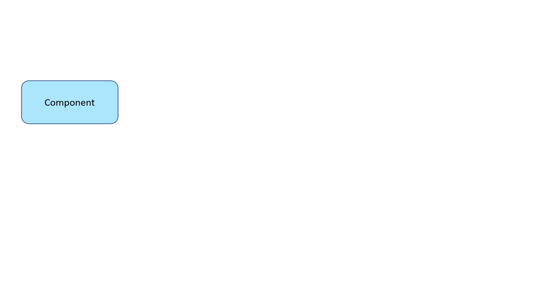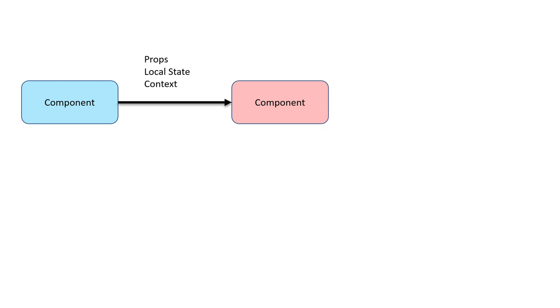Let me do a quick recap on how components work in React. When your application loads a component, it renders it onto the screen. Then, based on changes in props, local state, or context, the component gets re-rendered. This keeps happening over and over, and that's ultimately what updates the UI for the user.